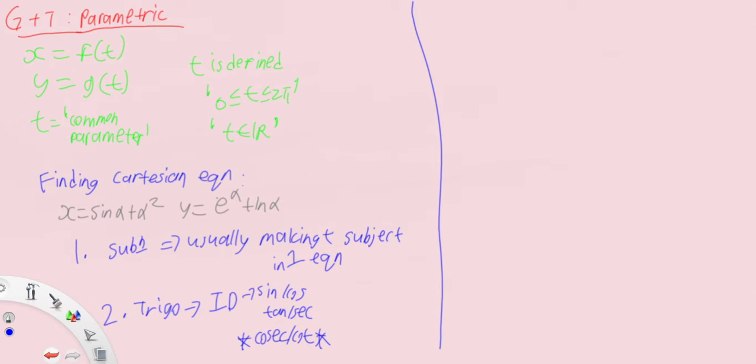So when I say substitution, you're basically substituting one equation into another and getting rid of t. Because when we talk about Cartesian equation, the Cartesian equation is x and y purely.